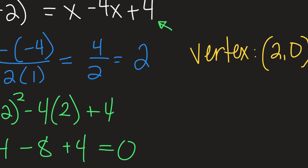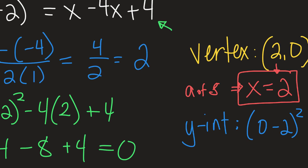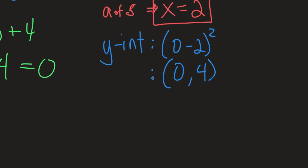Now that we have the vertex, we can answer the other attribute questions. The axis of symmetry is X equals 2 — the same value as the X coordinate of the vertex, but written as a linear equation. X equals 2 is the equation of a vertical line passing through 2. For the Y-intercept, we plug in 0 for X: 0 minus 2 squared gives negative 2 squared, which is positive 4. So the Y-intercept is the point (0, 4).